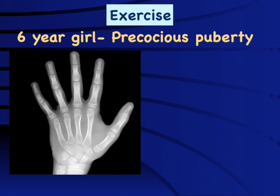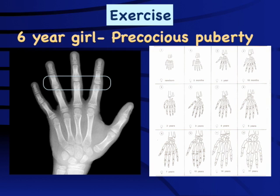Exercise three: a 6-year-old girl with precocious puberty. What is the bone age? Looking at the epiphysis and metaphysis, the epiphyses are at least as large or slightly larger than the metaphyses. The number of carpal bones that have already appeared corresponds to a stage of approximately 11 years. This girl clearly has progressive precocious puberty with advanced bone age — she will end up short without treatment, making bone age assessment critically important in this case.